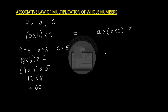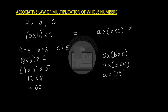Now for a × (b × c) with the same values: first compute b × c = 3 × 5 = 15, then 4 × 15 = 60. So (a × b) × c is the same as a × (b × c), and this is called the associative law of multiplication of whole numbers.